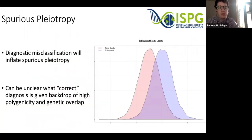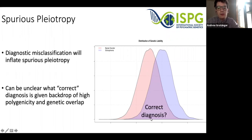A third type is spurious pleiotropy, which often occurs when diagnostic misclassification is present — highly relevant for psychiatric disorders given rates such as 15% misclassification across bipolar disorder and schizophrenia. But it can be unclear what misclassification means given really high rates of genetic overlap. If we take a theoretical distribution of bipolar disorder genetic risk in red and schizophrenia risk in blue, it's unclear what the correct diagnosis would be for someone in the middle. This is something we can begin to move past using symptom-level data.